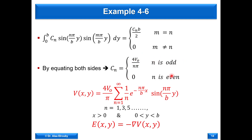Equating both sides gives Cₙ = 4V₀/(nπ) for n odd, and zero for n even. So V(X, Y) has this solution with N always a positive odd number, valid in the region of the solution. Once we have this expression, we can find E = −∇V by taking the minus gradient. I would like you to go through these steps, learn how to apply the boundary conditions, and follow through to the final result.